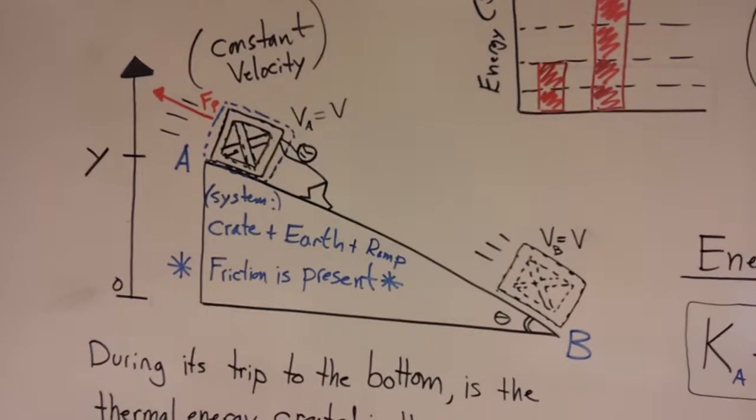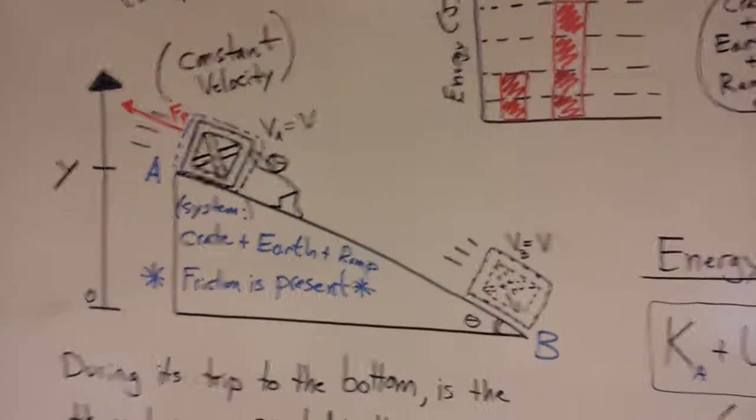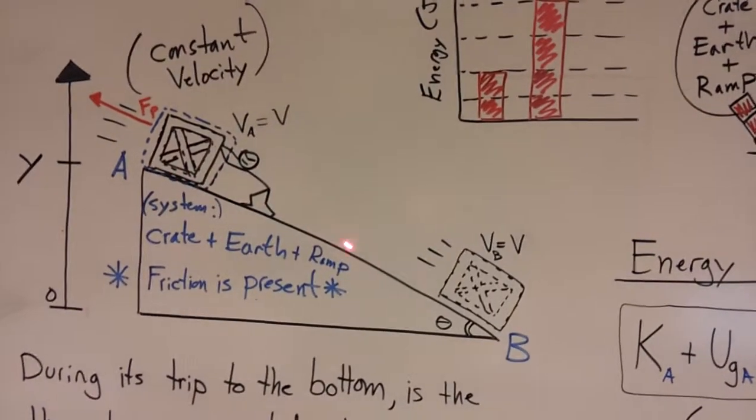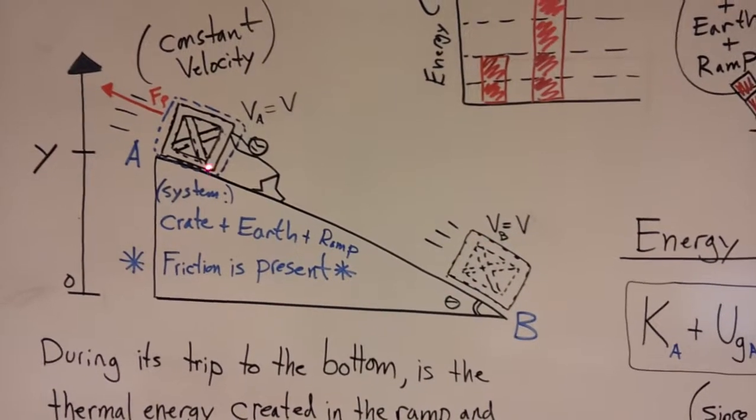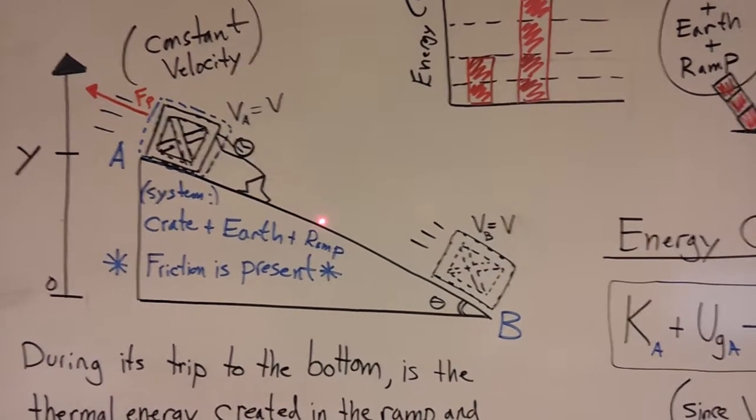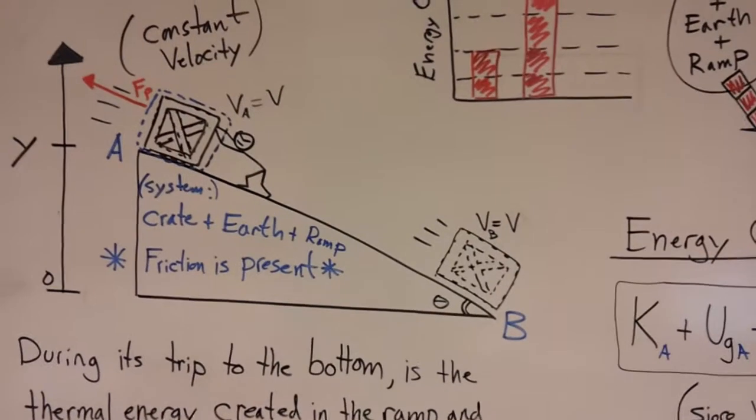So we know the crate is losing gravitational potential energy because it starts at some positive vertical position Y, and in the end, it reaches a final vertical position of zero. And if there's friction present, as the crate slides down the inclined plane, there's going to be some energy lost to thermal energy because of friction.